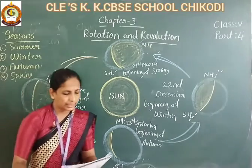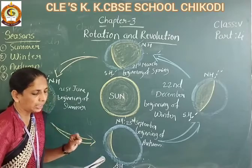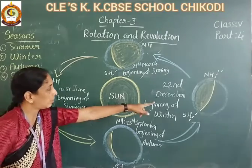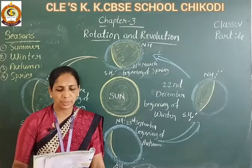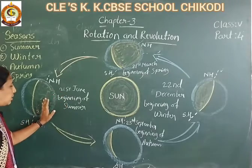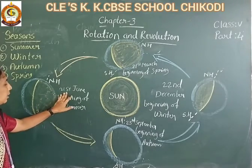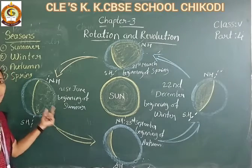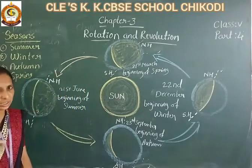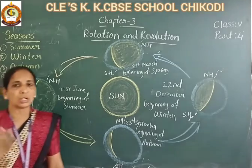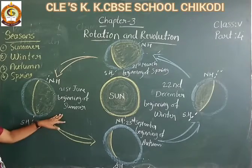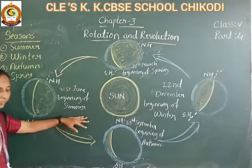The longest day in the northern hemisphere is 21st June. It is the beginning of summer. It is also called the summer solstice. Solstice means when a hemisphere receives the maximum or minimum sun rays. So on 21st June, summer begins in the northern hemisphere.